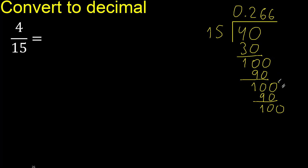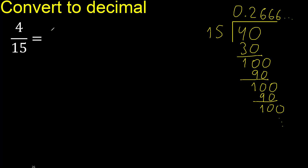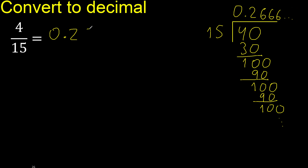This repeats, therefore repeat. Therefore 6 repeats — 6 repeat, 2, 6 repeat. Therefore like this: 6 repeating. Finish.